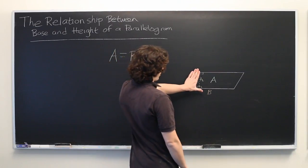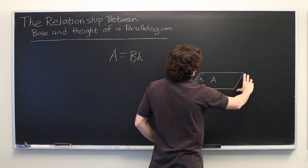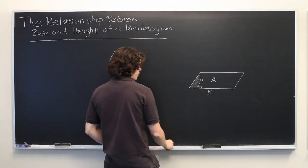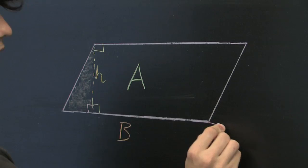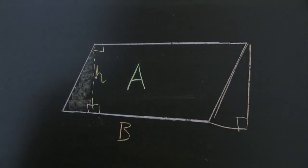Now, imagine that we're chopping off that triangle. We're sliding it over and sliding it in right there. That's a right angle.